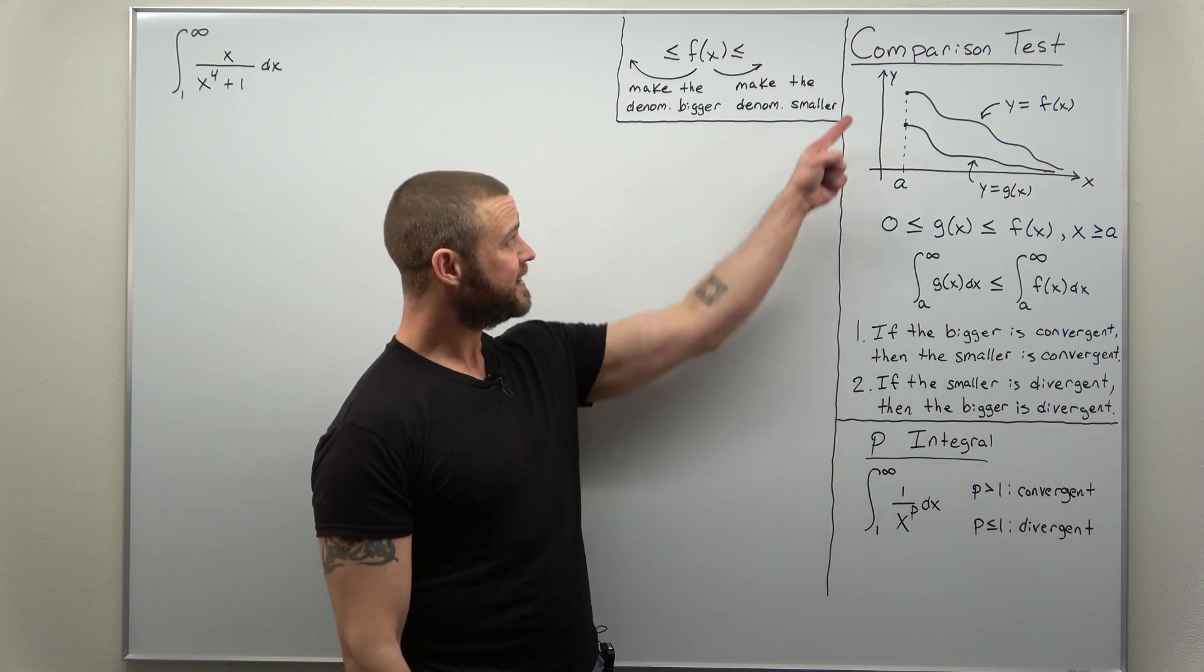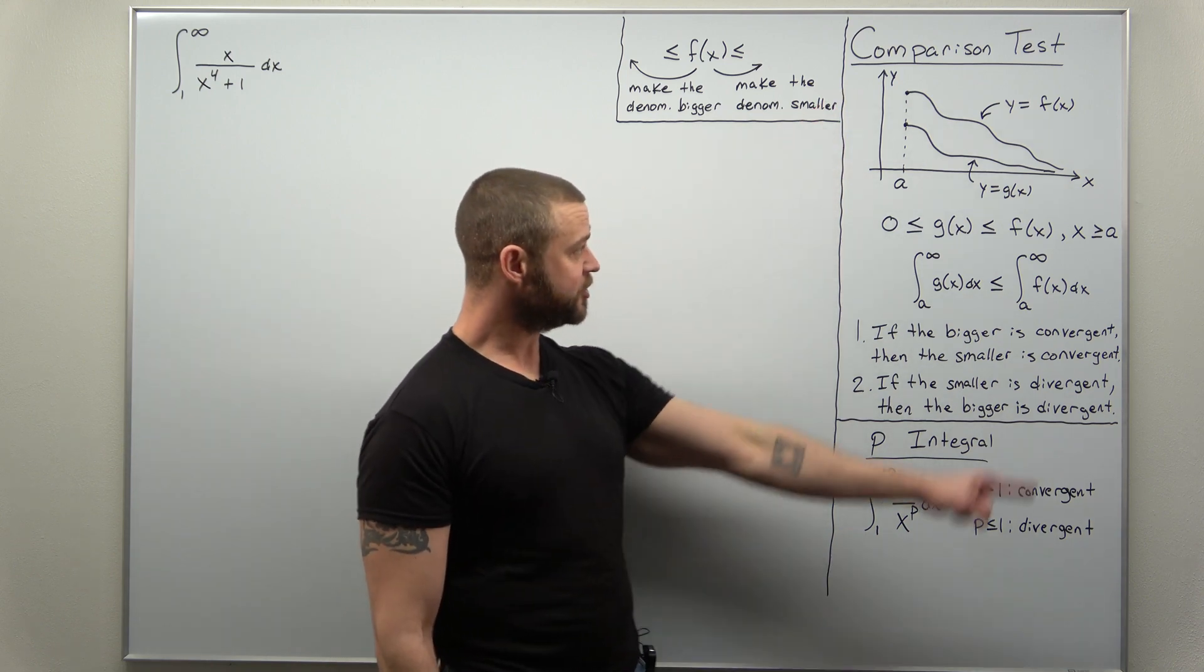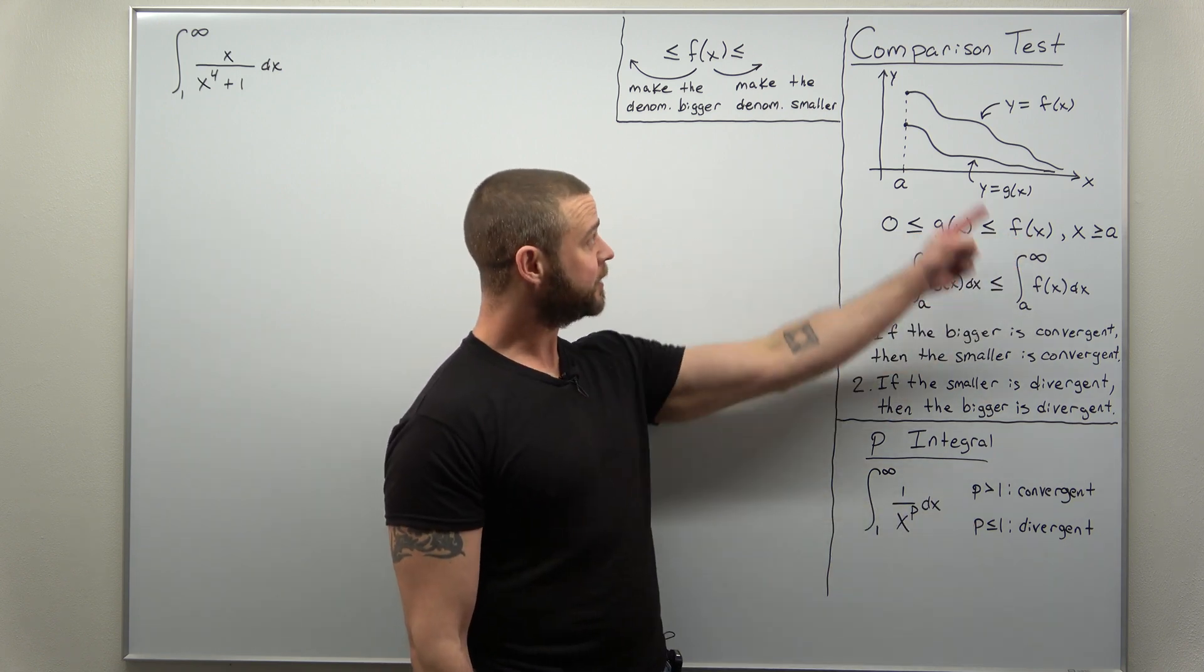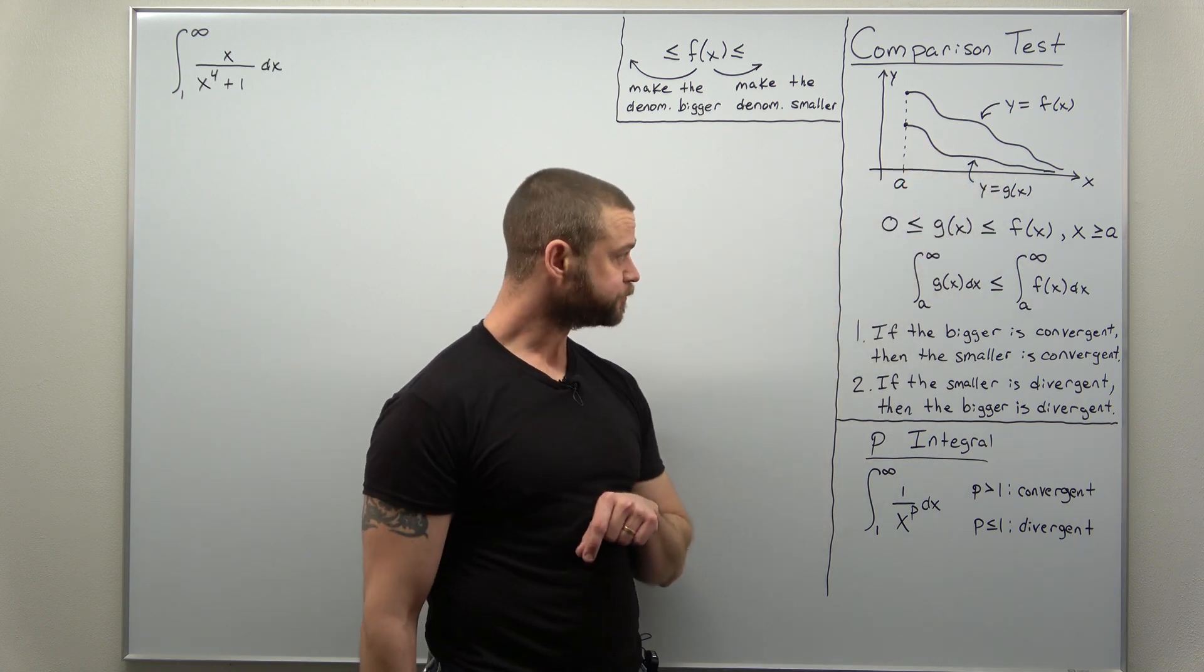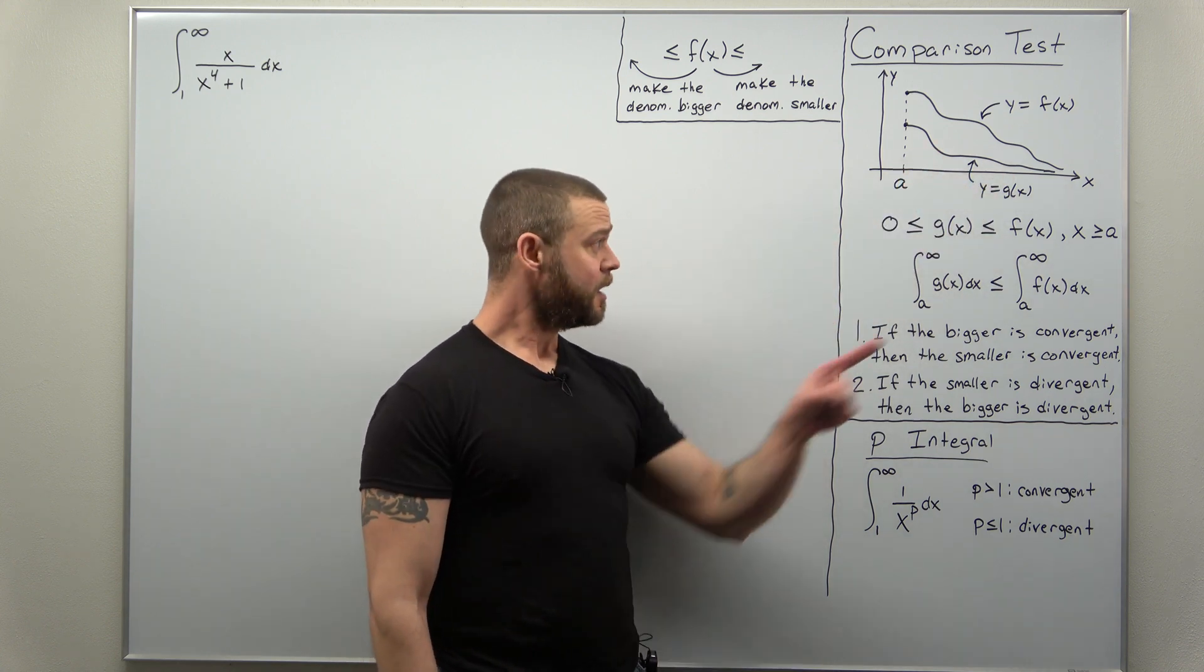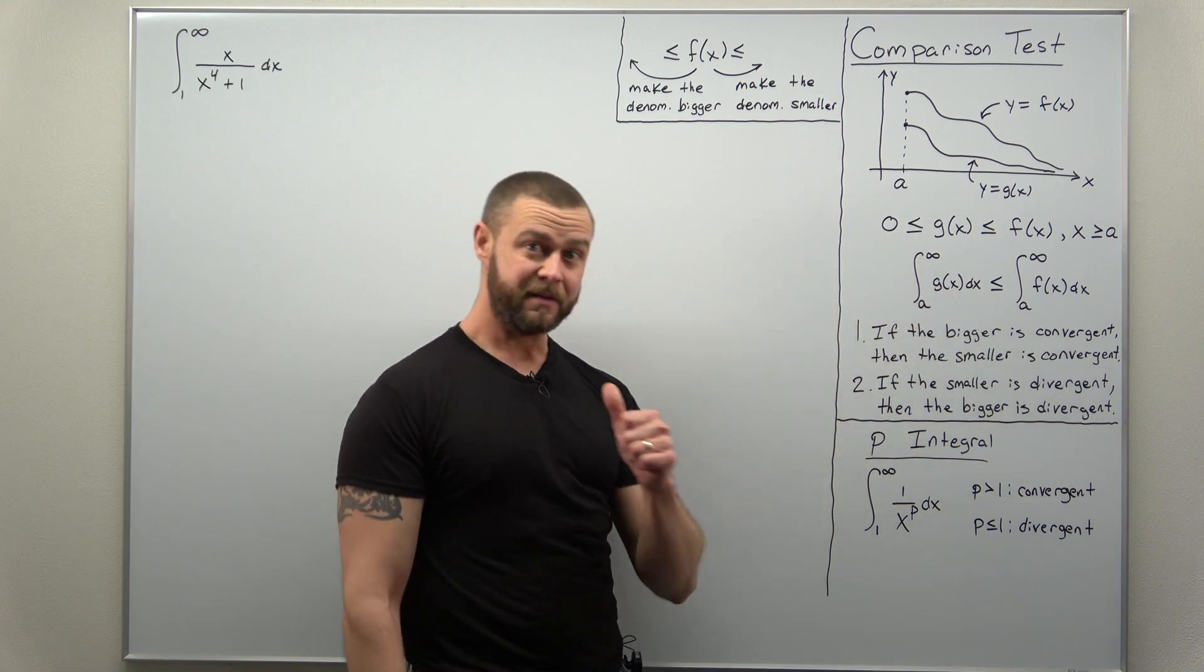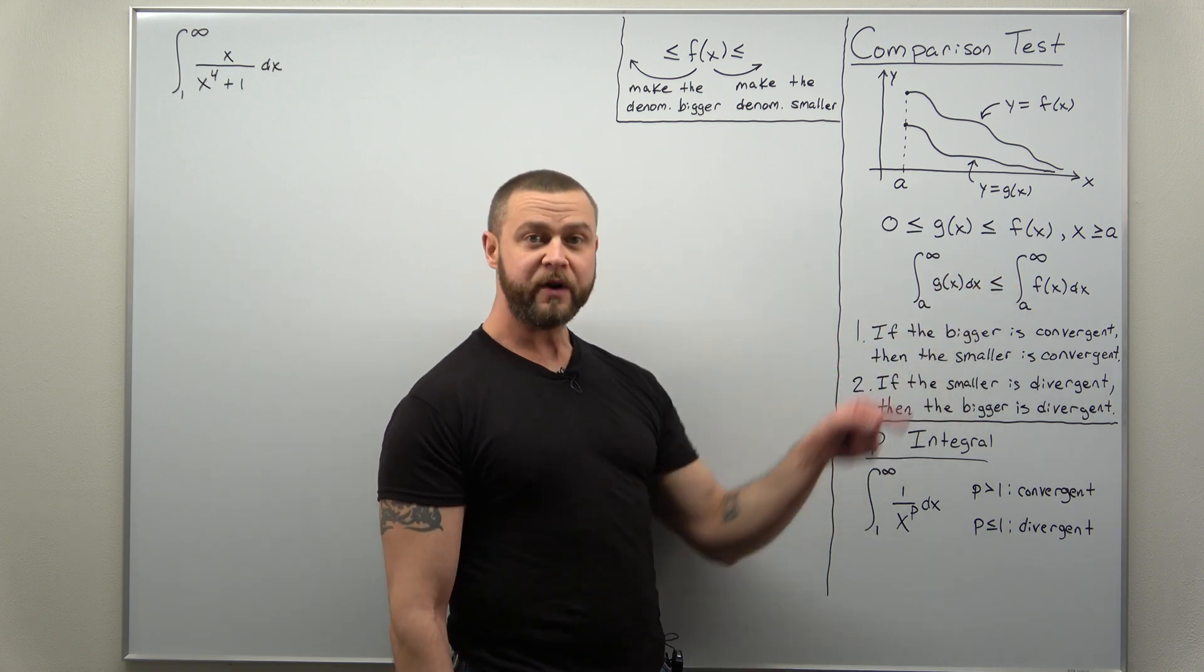So first, let's make sure you understand the comparison test. It involves two functions, f of x which is bigger than g of x. Graphically that means the graph of f is above the graph of g. And provided both f and g are non-negative, so they're maybe equal to zero but greater than zero as well, then we reach this conclusion.